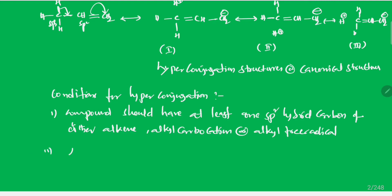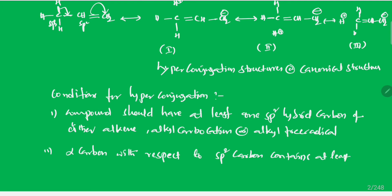What is the second condition? Alpha carbon with respect to SP2 carbon must contain at least one hydrogen — that is, alpha carbon with alpha hydrogen. Carbon which is attached to SP2 carbon is alpha carbon, and the hydrogen attached to it is alpha hydrogen.